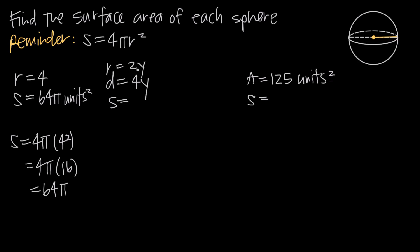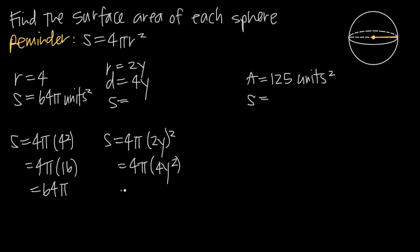So if the radius is equal to 2y, we just plug 2y in for r. Surface area equals 4 pi times (2y) squared. Squaring 2y gives us 4y squared, and 4 times 4 gives us 16. So the surface area of the sphere with diameter 4y is 16 pi y squared.